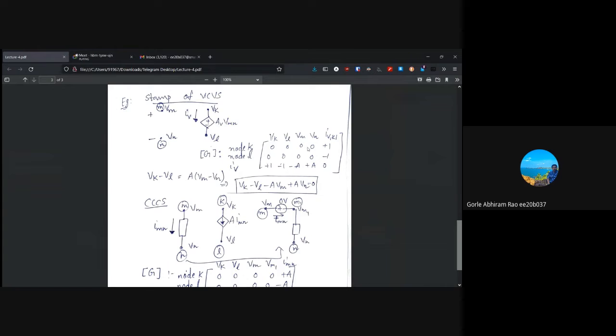So, for iv, we'll have a coefficient of plus one. And for node l, we'll have a coefficient of minus one for iv. And now, if you want to account for this iv variable, we can just write the potential difference between k and l is a into vmn. So, vk minus vl is a into vm minus vn.